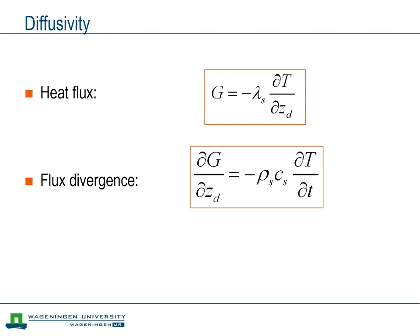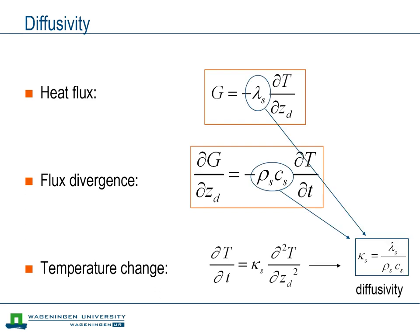Both differential equations that we just introduced can be combined into a diffusion equation. This eliminates the soil heat flux from the equation. The diffusion equation links the time rate of change of the soil temperature to the curvature, or second derivative, of the soil temperature profile. Here, the soil thermal property that connects both terms is appropriately called the thermal diffusivity. Since the diffusion equation was derived from the equation for conduction and the equation for heat flux divergence, the diffusivity can be directly linked to the conductivity and the heat capacity.